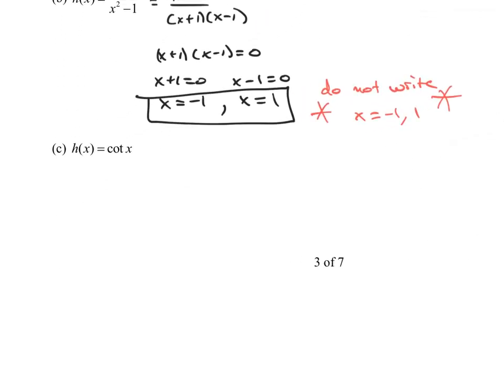Think about cotangent of x. What is cotangent of x? Isn't cotangent of x the same thing as cosine of x over sine of x? Hopefully you agree with that, cosine of x over sine of x. There's no factoring and simplifying here, but what we need is when is the denominator equal to 0.